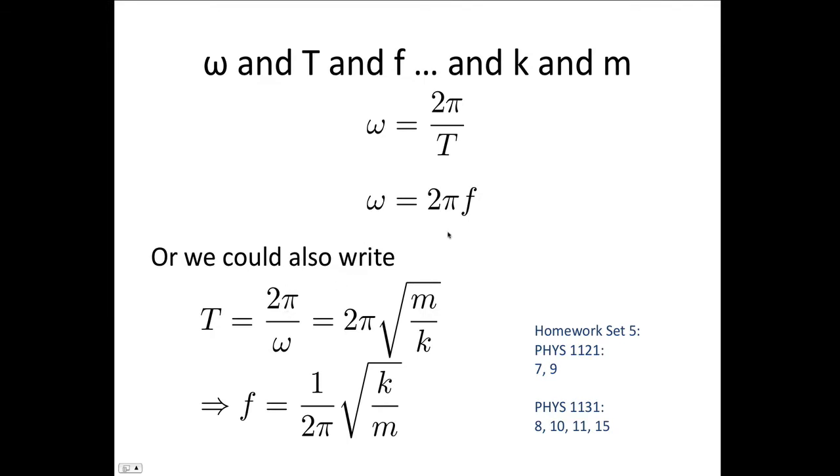Now we can also write this, because we've got ω equals 2πf. But we've said ω equals root k/m. So if ω is on the bottom, we've got T equals 2π root(m/k). And f equals 1 over 2π root(k/m).